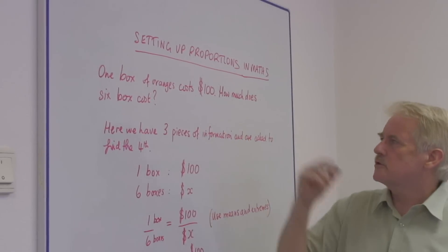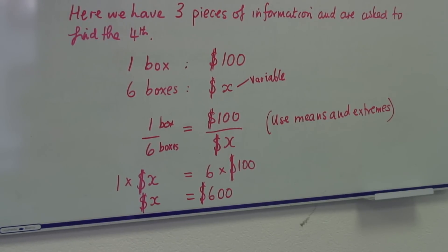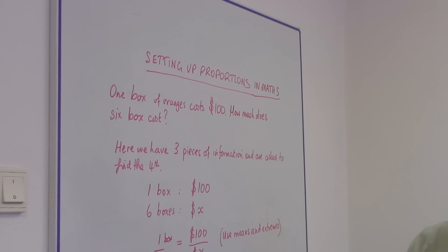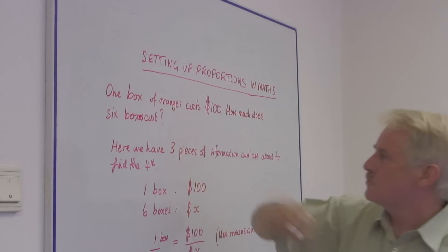We have a problem. One box of oranges costs $100. How much does six box cost? Well, there should be boxes of course because there's more than one.